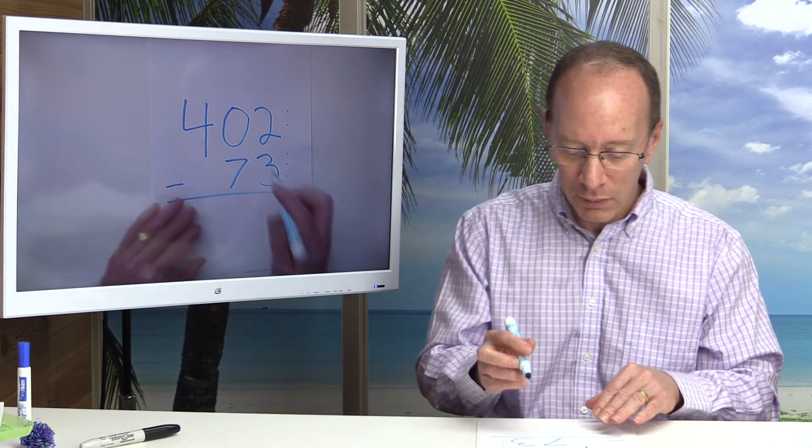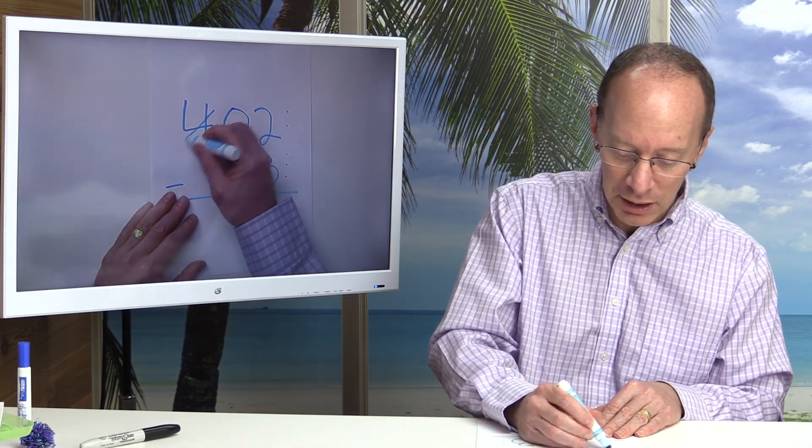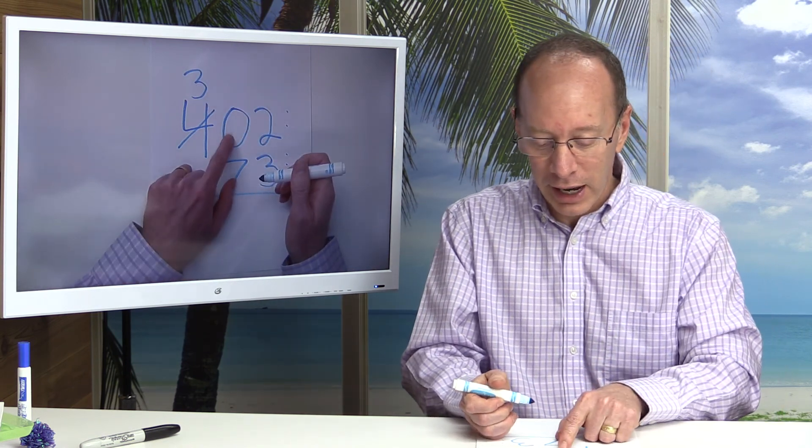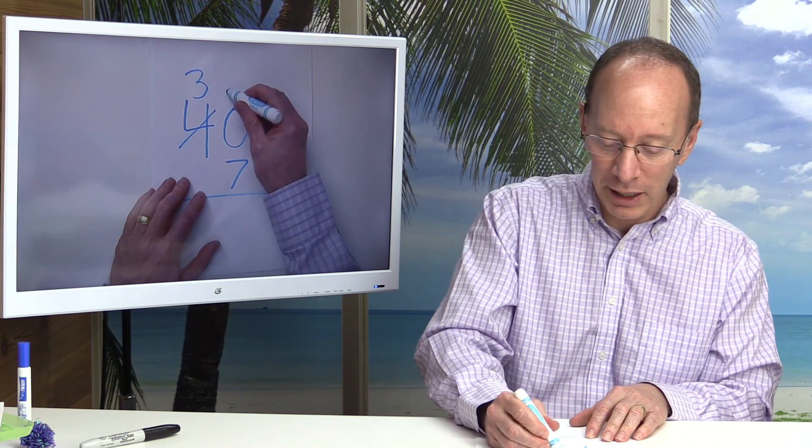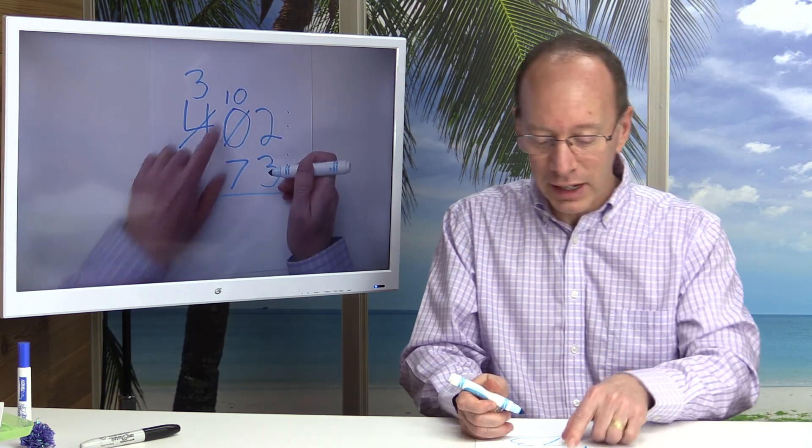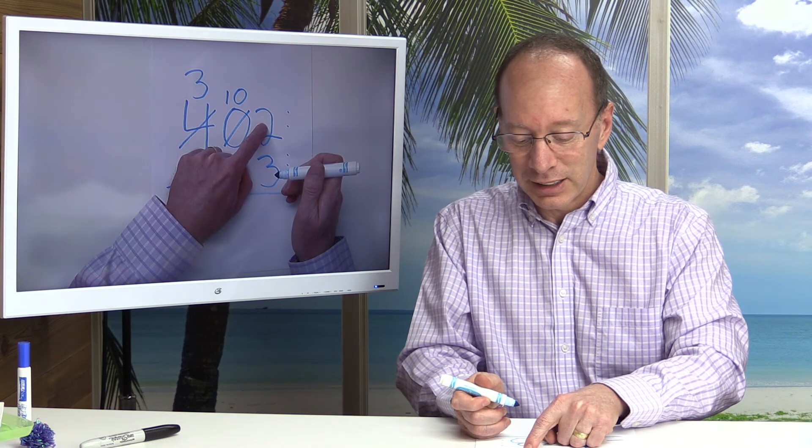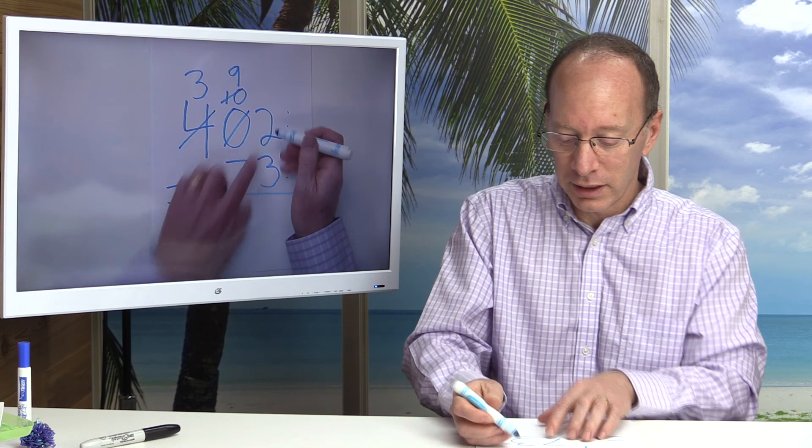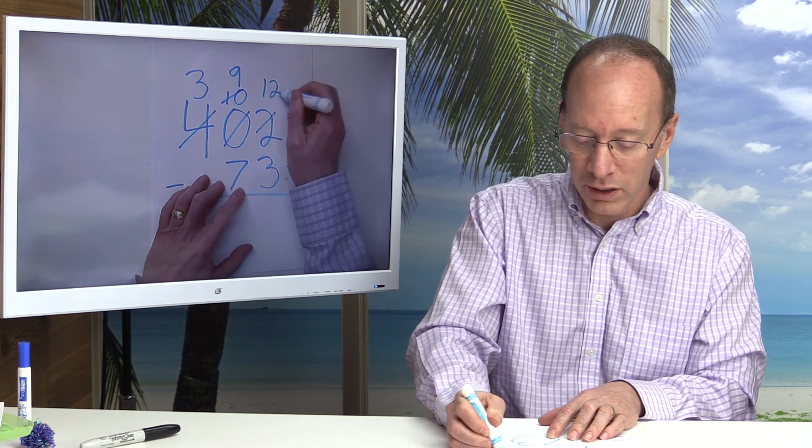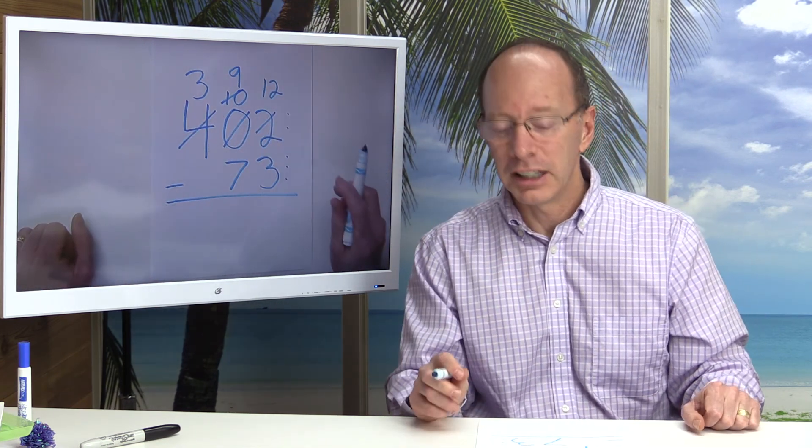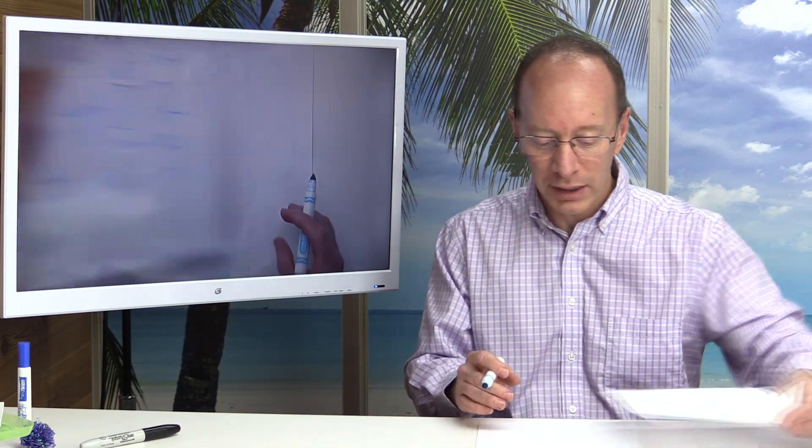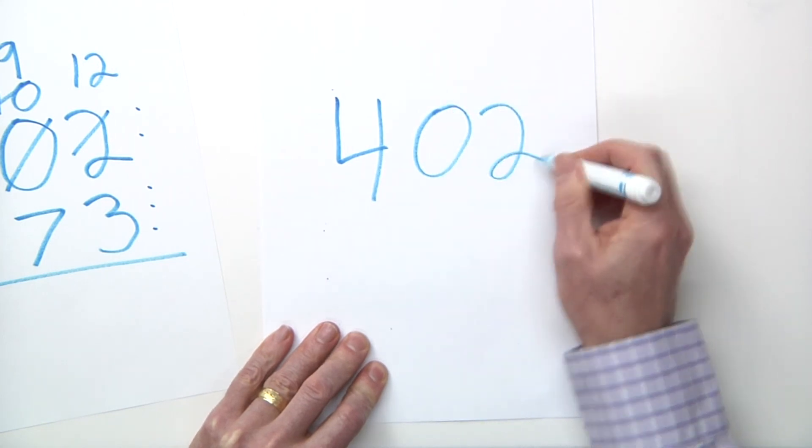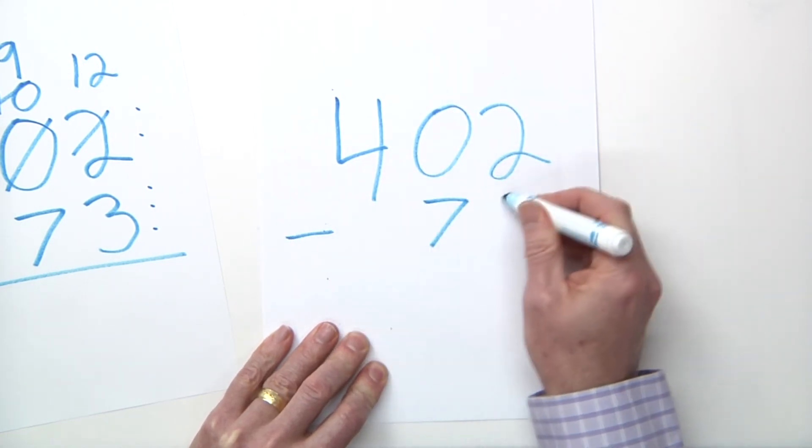Before, what I would do is I would cross out the four and put a three here, and then I would have to take that and make this a 10. Then I would have to borrow from the 10 to make this a 12. So this would be a 39, and then this would be 12. A lot of stuff here going on. I'm going to show you an easier way. So let me rewrite this problem here. This was 402 minus 73.